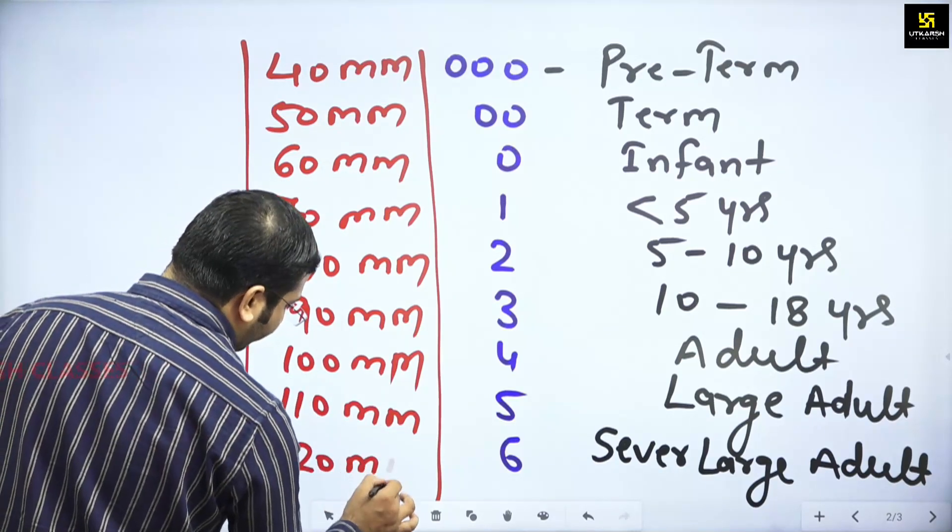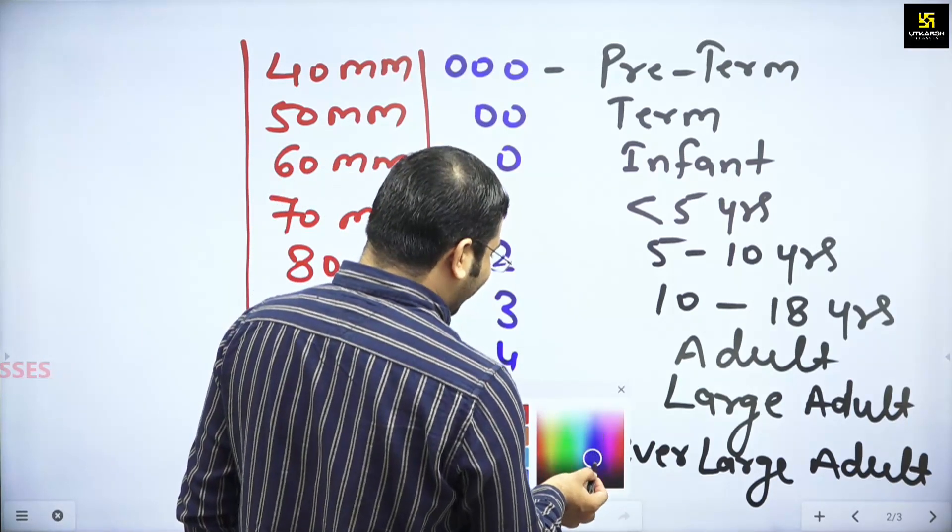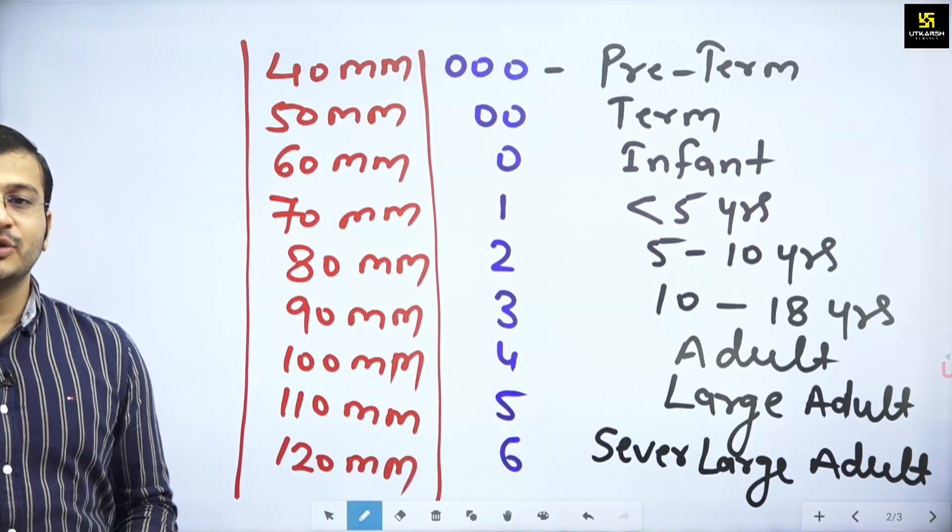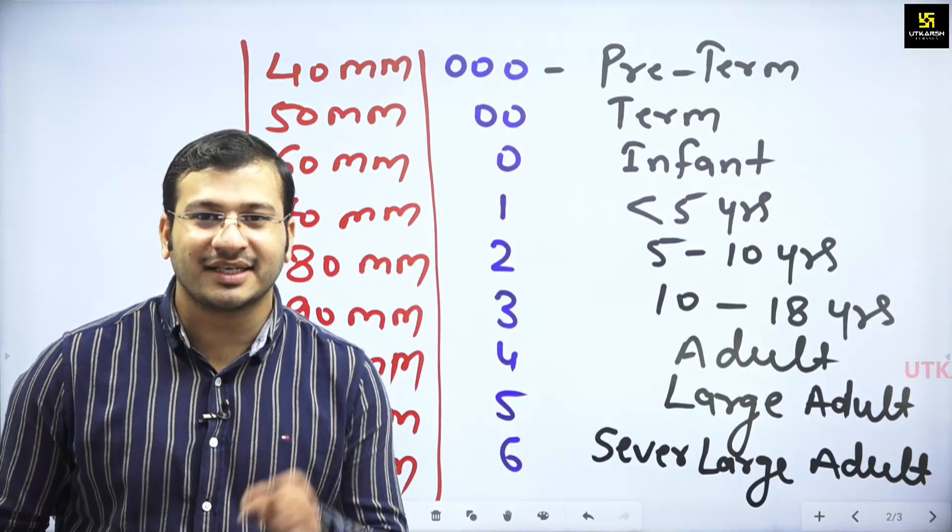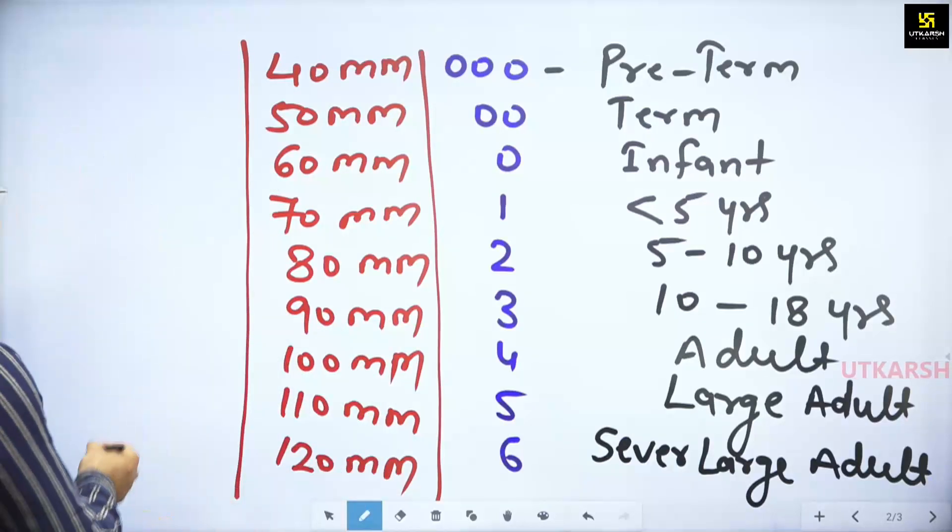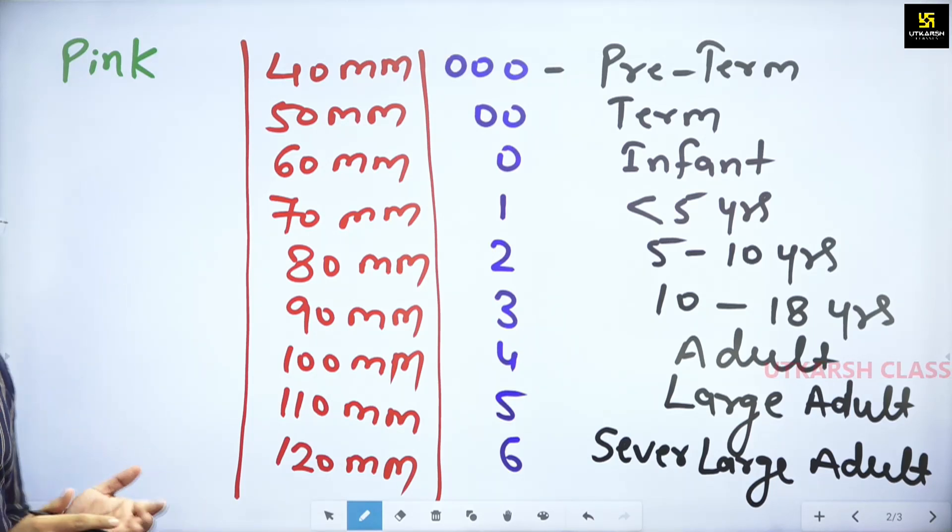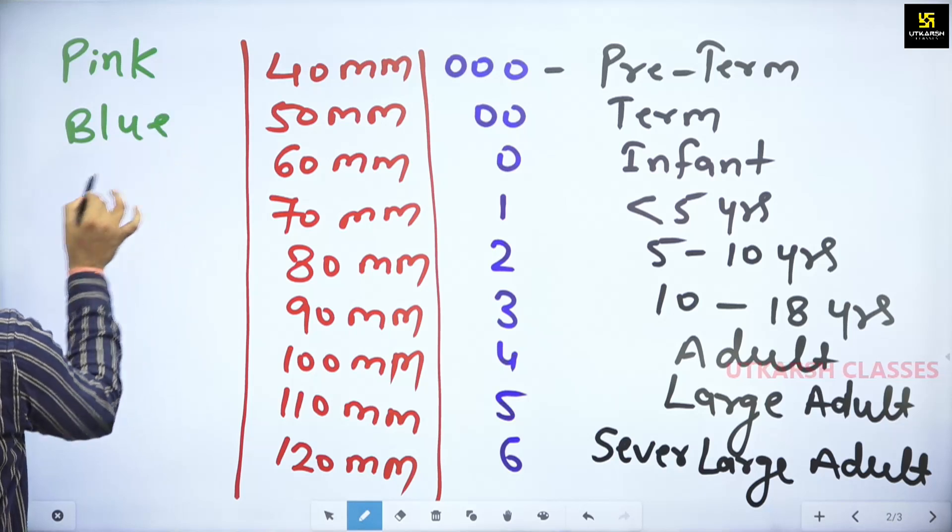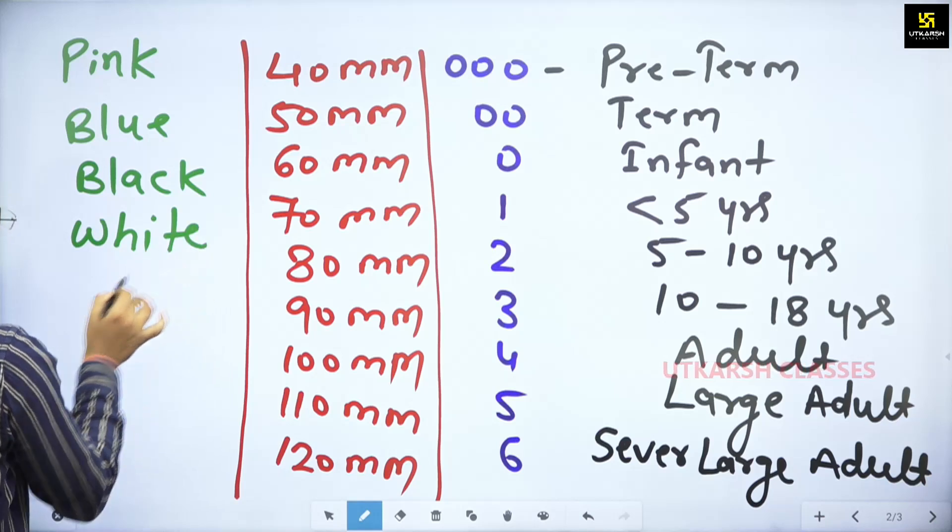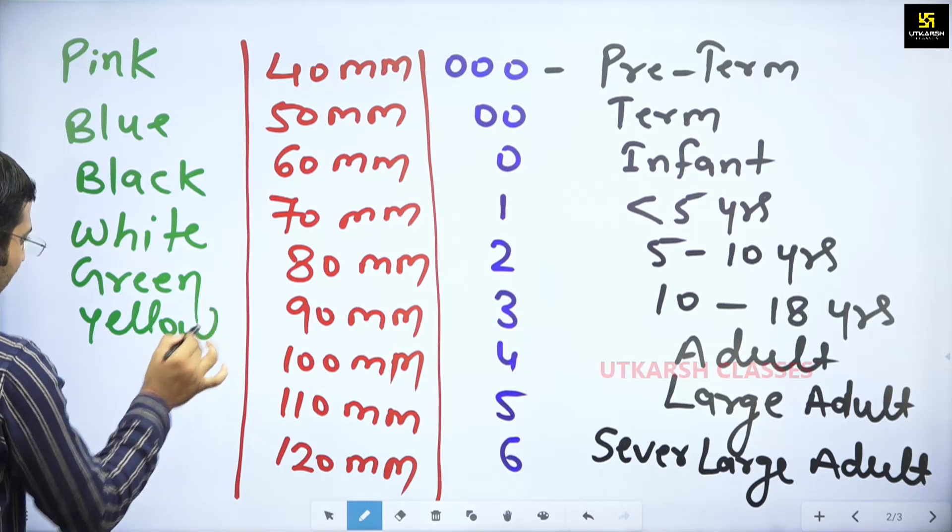Next important is what the color will be. See the color. First talk about the colors: the smallest is pink. Then if we move next will be blue, then blue, then is white, then you will see green, then you will see yellow.